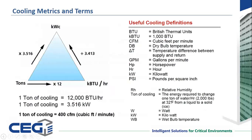On the right side, the definition of a ton of cooling — a fair amount of us don't know what that means, but it's just interesting. It's the energy required to change a ton of water — 2,000 pounds of water at 32 degrees Fahrenheit, which is freezing — to turn that water into ice. That's the amount of energy required. That's a ton of cooling. That's a little side nugget. Now you know.